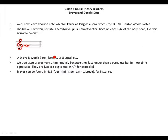Breves can be found in four-two time, which is four minims per bar, and four minims per bar equals one breve.